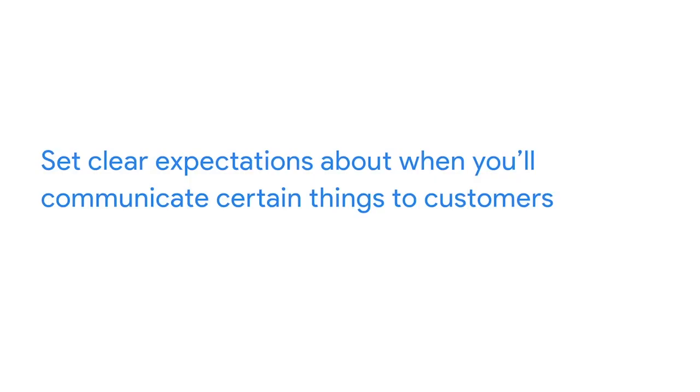High-performing project managers set clear expectations about when they'll communicate certain things to their customers. For example, you might want to set an expectation that you'll provide weekly progress updates to keep clients informed, rather than expecting them to come to you with questions. When troubleshooting an issue that won't affect the outcome — like replacing a designer quickly without skipping a beat — you can complete the task at hand without giving the customer any additional worry. You'll have to use your judgment regarding what's important to communicate to your client.